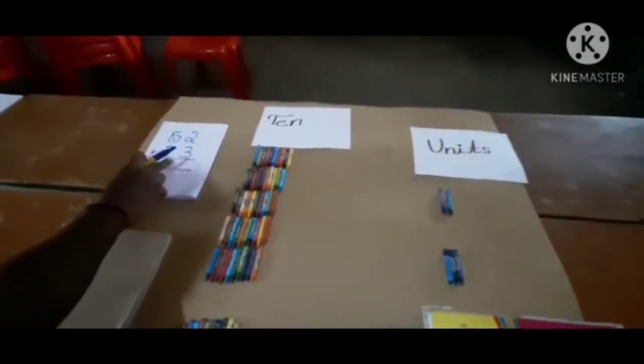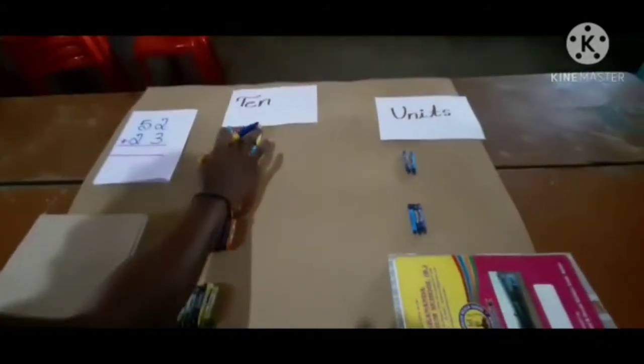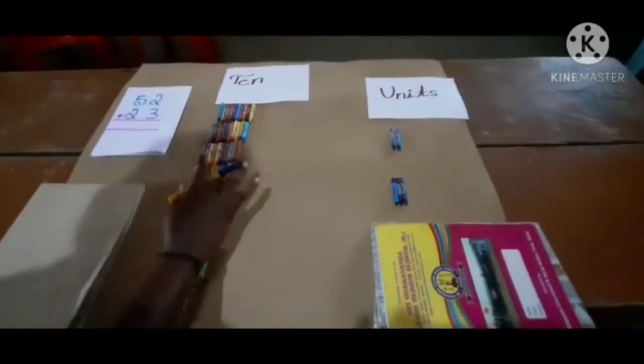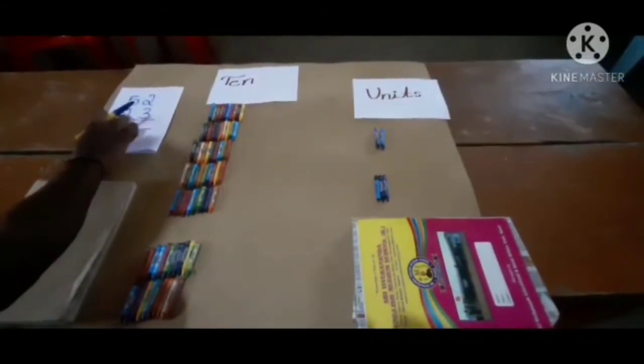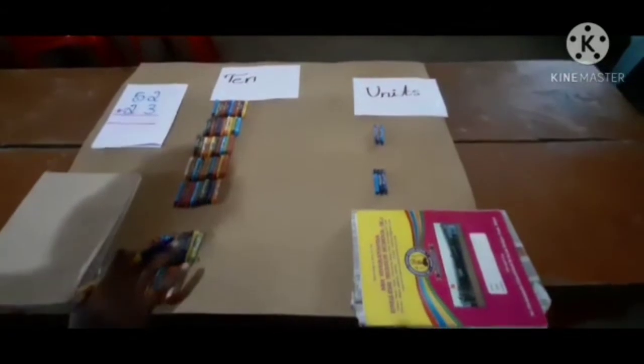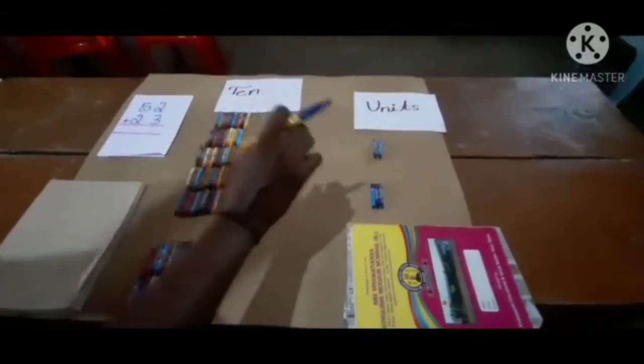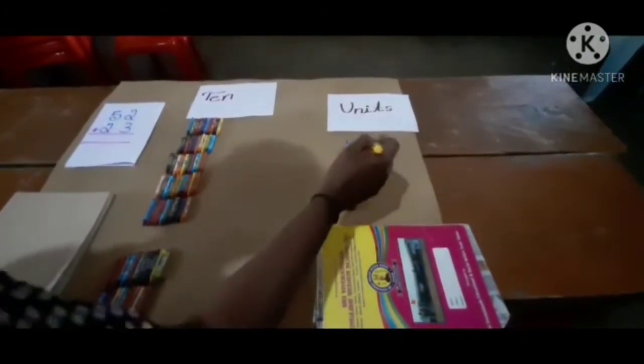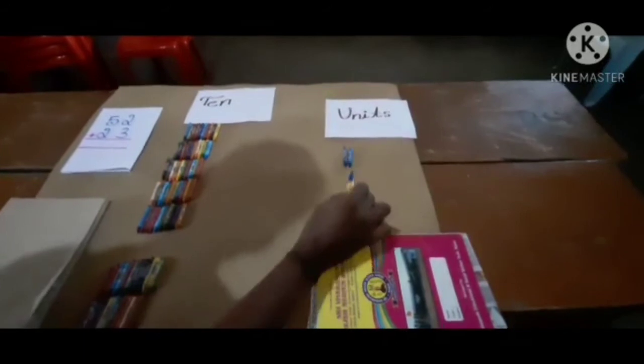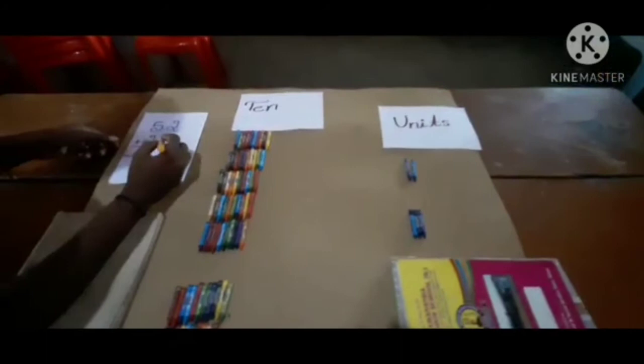Next, 52 plus 23. In 52, 5 tens: 1, 2, 3, 4, 5 tens, and 2 units. In 23, 2 tens and 3 units. First count units. 2 plus 3. Count now: 1, 2, 3, 4, 5. So 2 plus 3, 5.